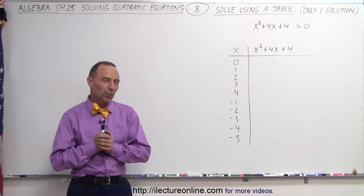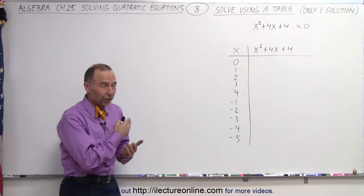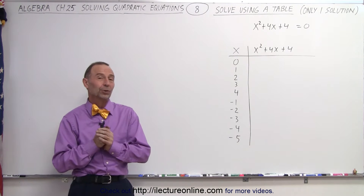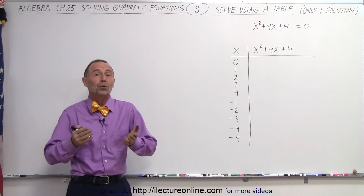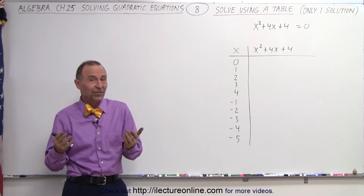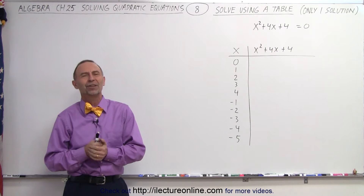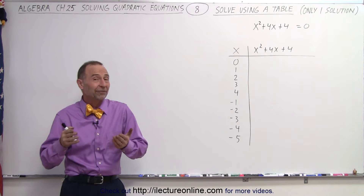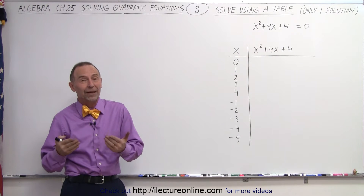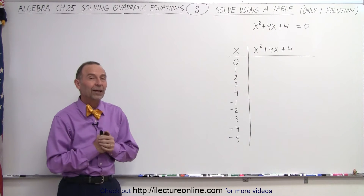Welcome to our lecture online. When we use the method of the table to solve a quadratic equation and there's only one solution, like there will be in this particular quadratic equation, how do you know there's only one solution? You may be looking for that second solution which doesn't exist and trying values forever. There are ways you can tell, and that's what's so nice about the method of the table of values.